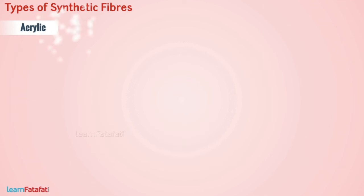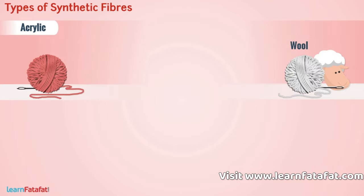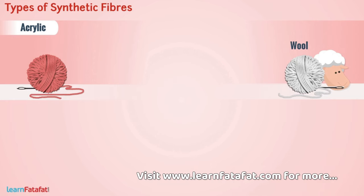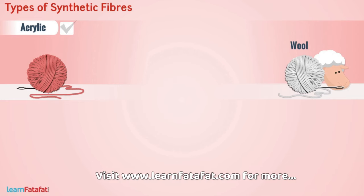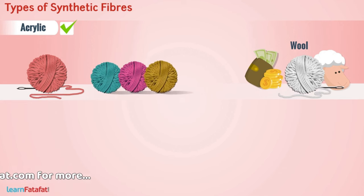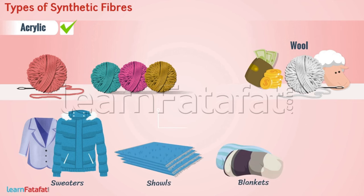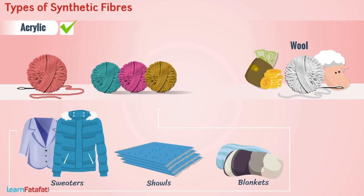Another artificial fiber which resembles wool is acrylic. It is a good alternative to expensive wool and is available in a variety of colors. Sweaters, shawls, and blankets made with acrylic are relatively cheaper than wool.